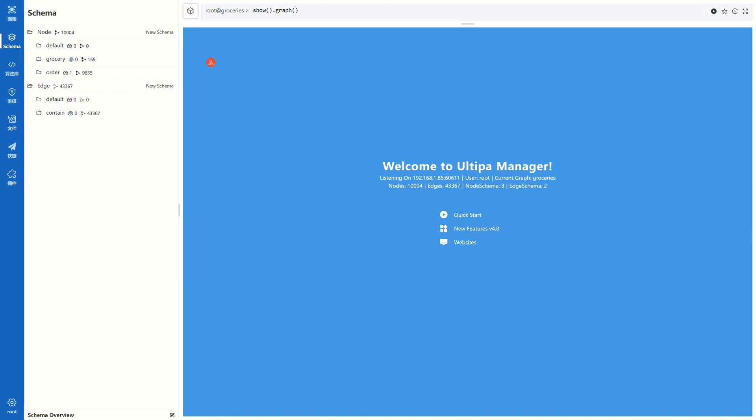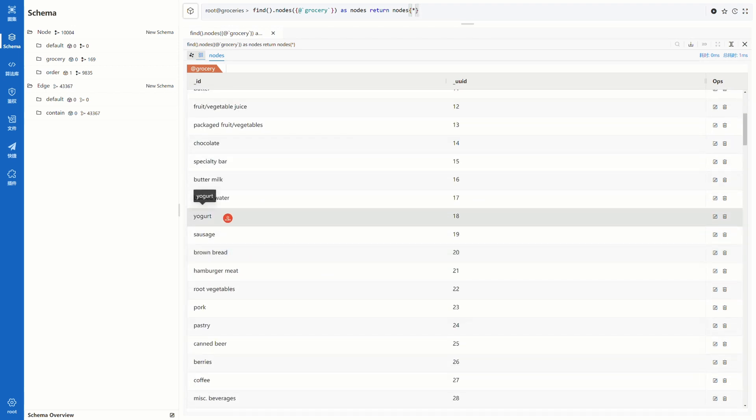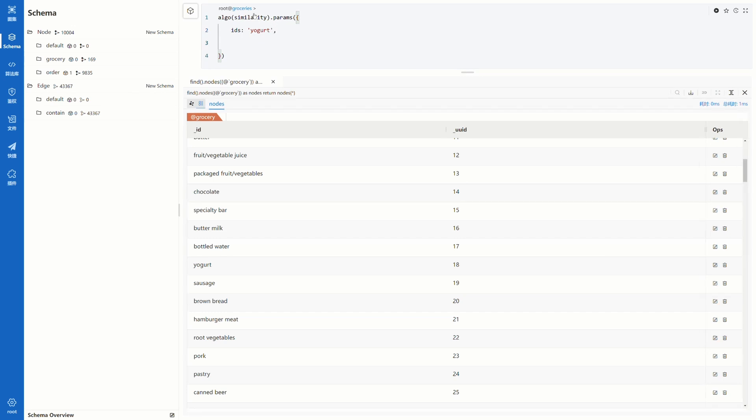We have the graph dataset in Altypa Manager. These are all the groceries. Let's take yogurt as an example and find which products are more similar with it. Use the similarity algorithm. In params, specify yogurt for IDs. It represents the first group of nodes you want to compare. For the second group of nodes, IDs2, we will specify all grocery nodes. Then the algorithm would pair yogurt with each node in IDs2.